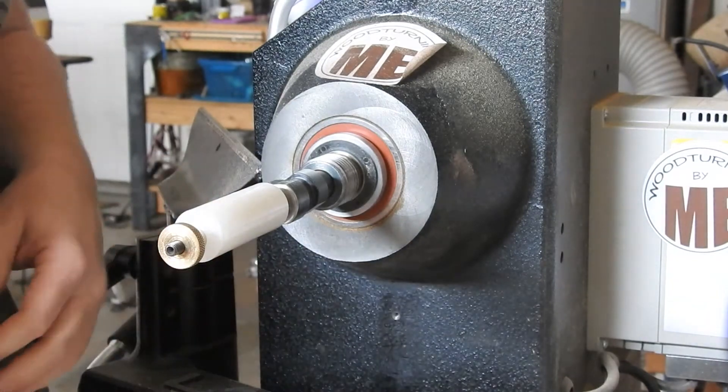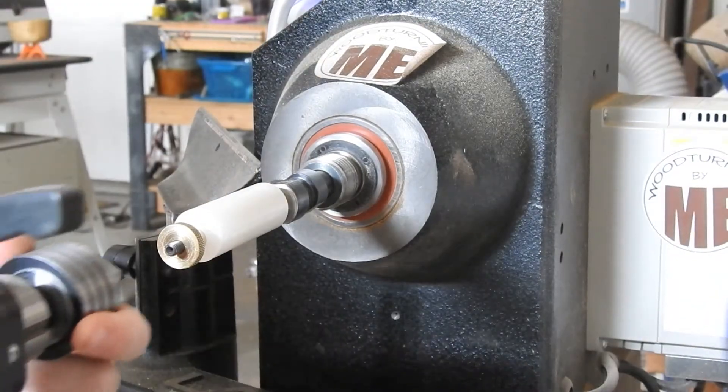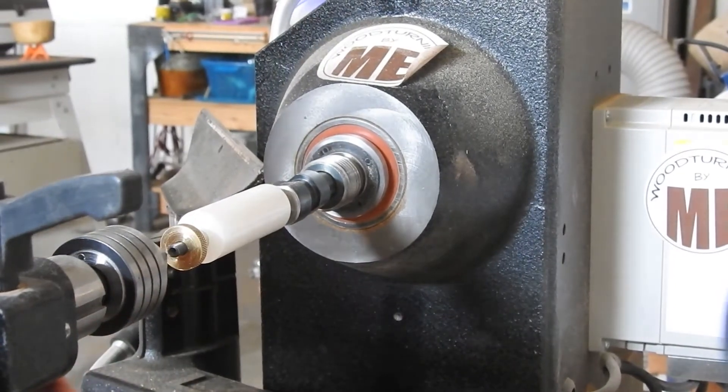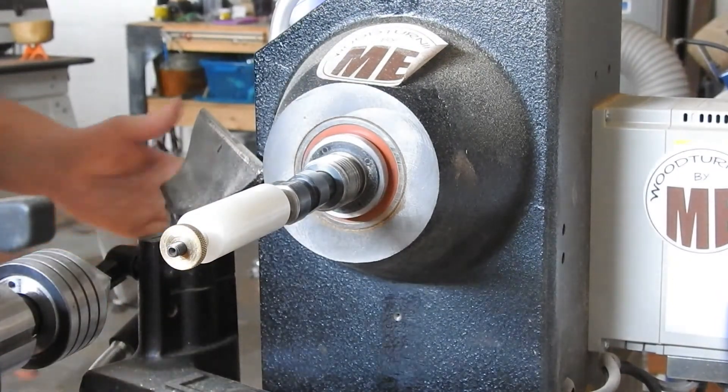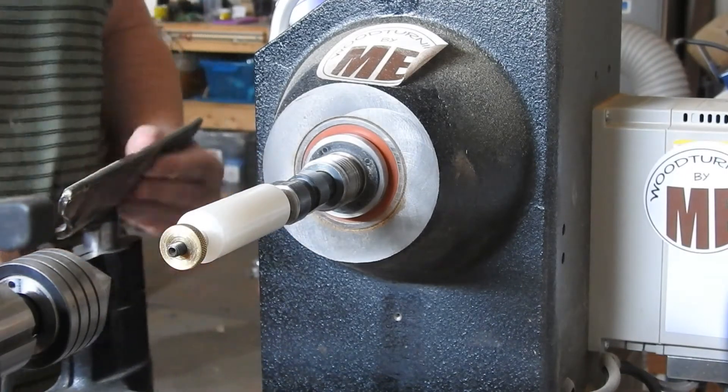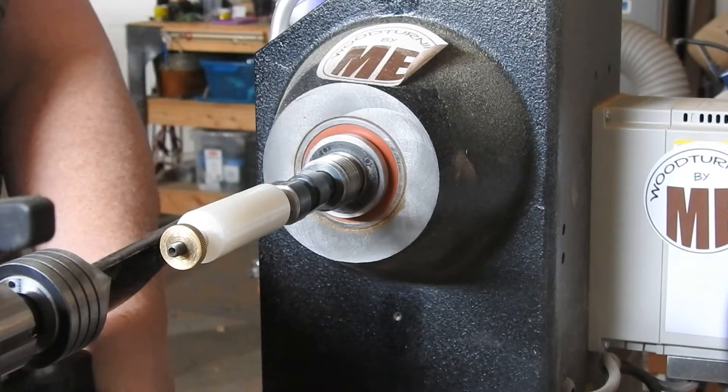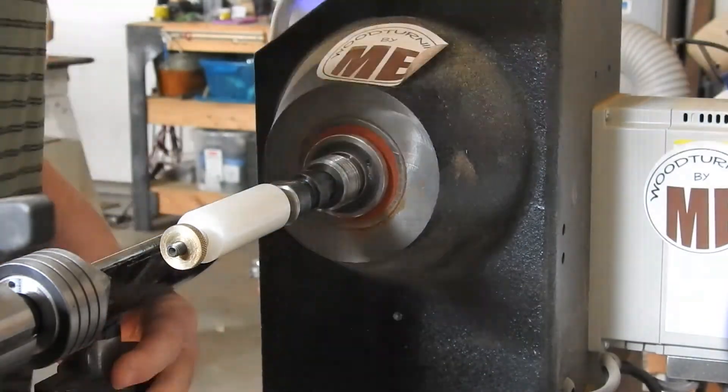Now I'm just bringing up the 60-degree cone center on the tailstock to support the mandrel. Here I'm making sure there's enough clearance for the tool rest. Here I'm just making sure the tool is at the correct position before securing the tailstock.